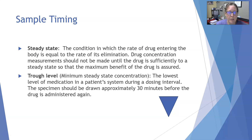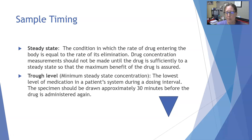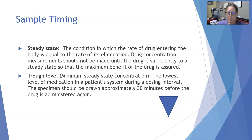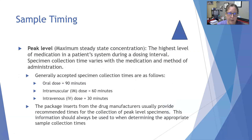A trough level is the minimum steady-state concentration — the lowest level of the medicine in the patient's system during a dosing interval. The specimen should be drawn about 30 minutes before the drug is given again. This is especially pertinent for IV antibiotics. For example, for a drug given every 12 hours where we check every third dose, blood is drawn 30 minutes before that third dose. Timing and cooperation with nursing is critical to draw the trough level correctly.